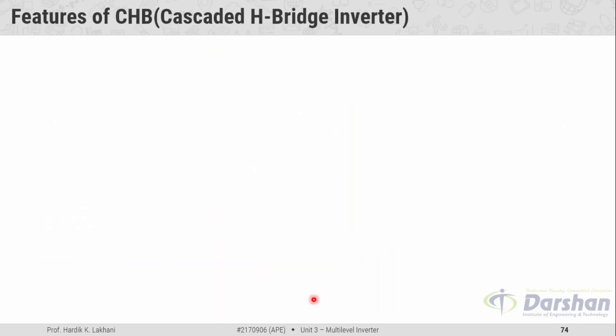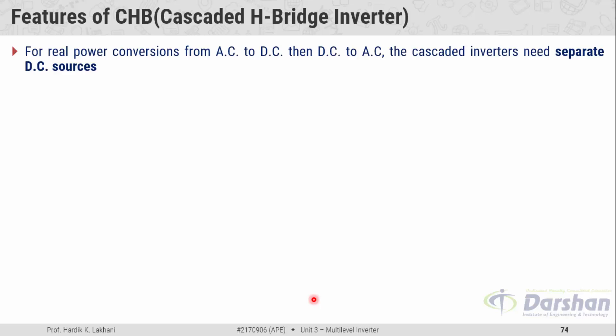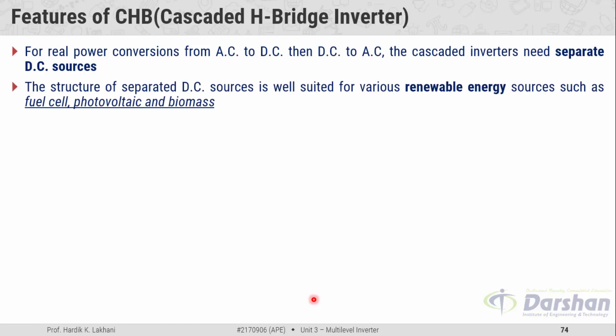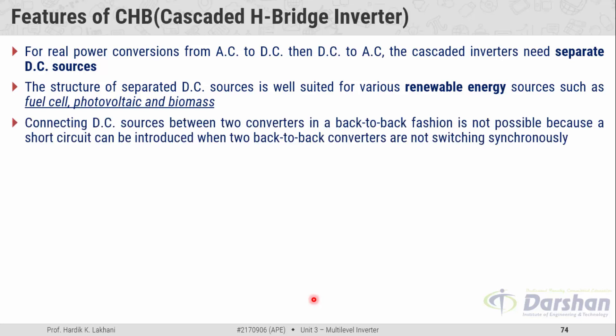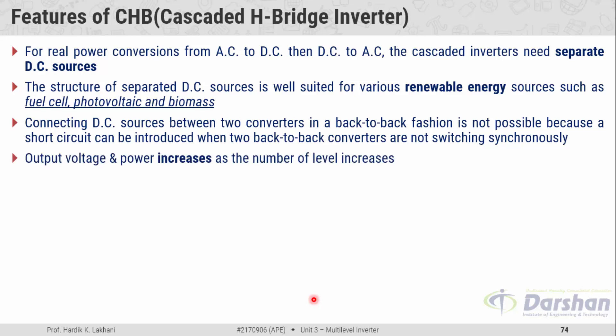Features of the cascaded H-bridge multilevel inverter: for real power conversions from AC to DC then DC to AC, cascaded inverters need separate DC sources. The structure of separated DC sources is well suited for various renewable energy sources like fuel cells, photovoltaics, and biomass. Connecting DC sources between two converters in a back-to-back fashion is not possible because a short circuit can be introduced when two back-to-back converters are not switching in a synchronous manner. Output voltage and power increase as the number of levels increases.